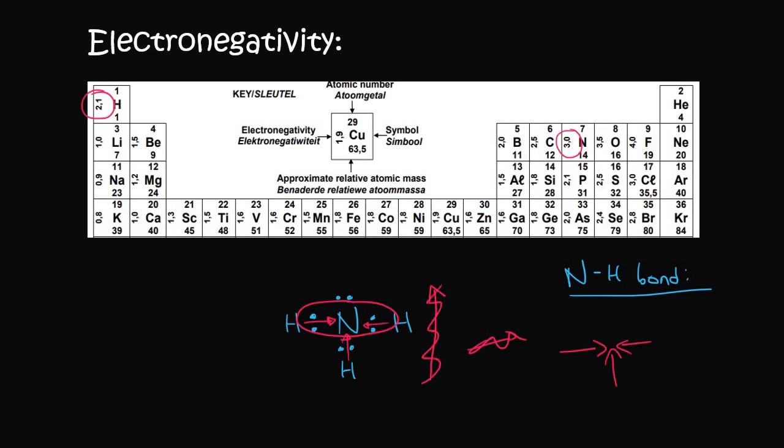And so the net dipole moment is going to go upwards. So can we say that this is a polar molecule or non-polar? Well, this is going to be a polar molecule, and it has a net dipole moment. So it's a polar molecule, meaning that it's got positives and negatives. They don't cancel each other out.